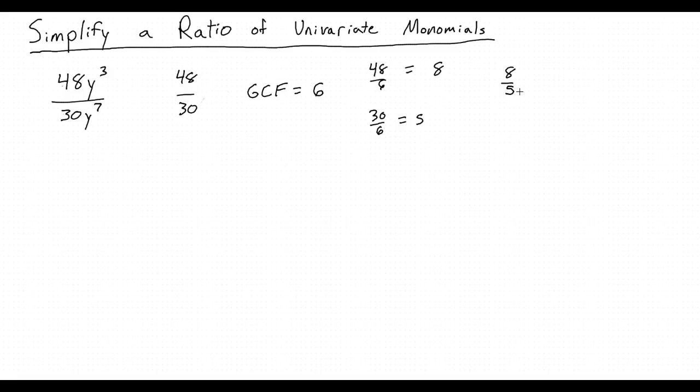Next, we simplify the variables, which is y to the third in the numerator and y to the seventh in the denominator. Using the quotient rule, we know that the power of the final y will be 3 minus 7, or y to the negative fourth, which can also be written as 1 over y to the fourth.